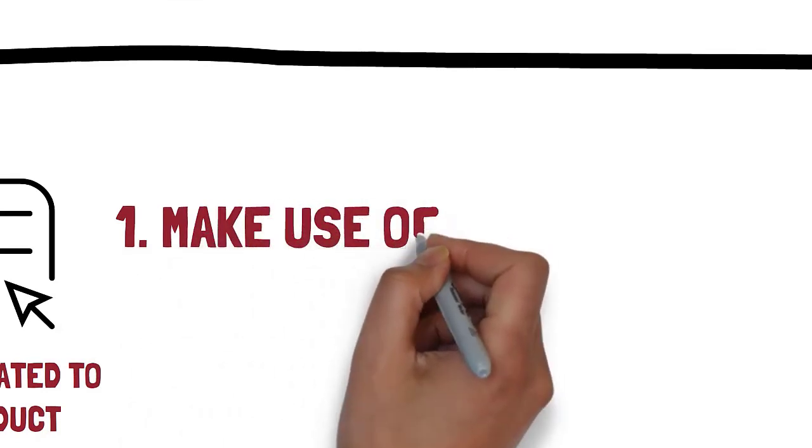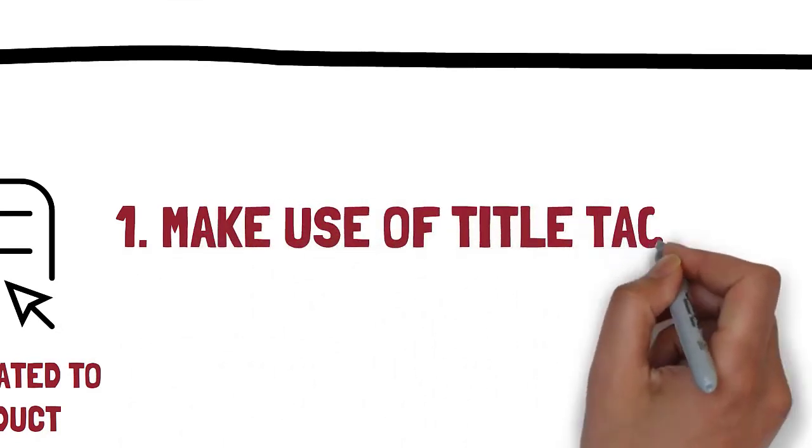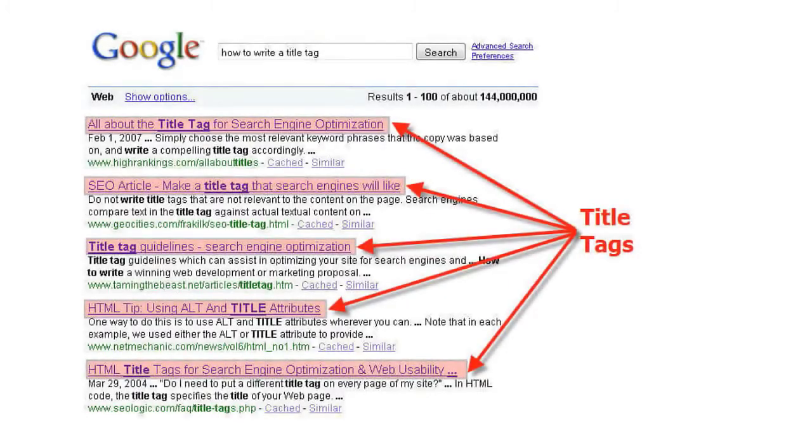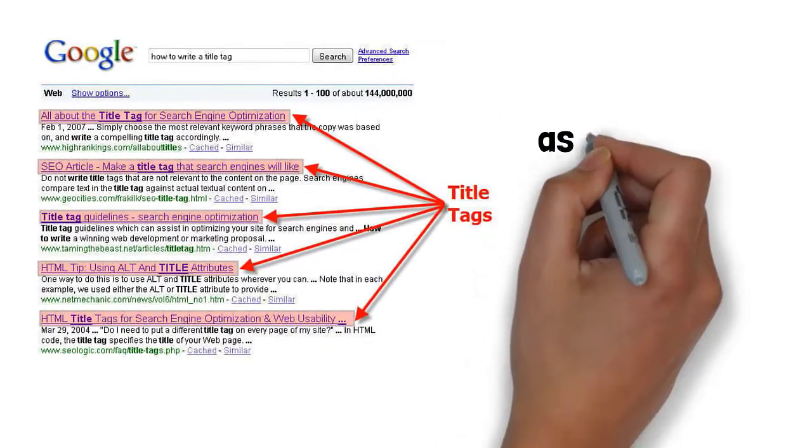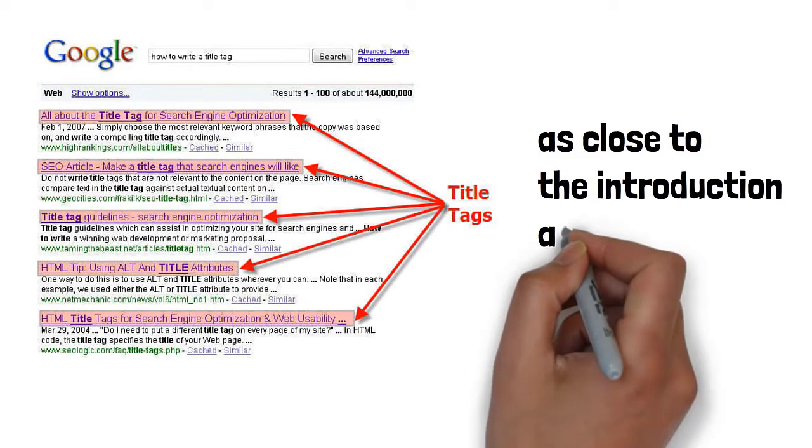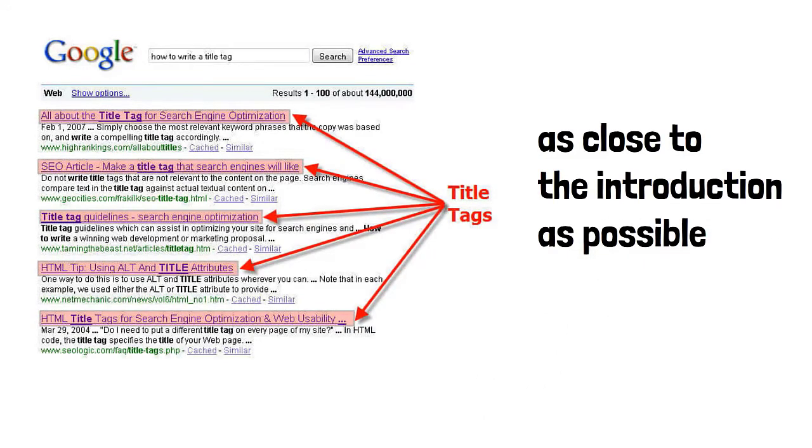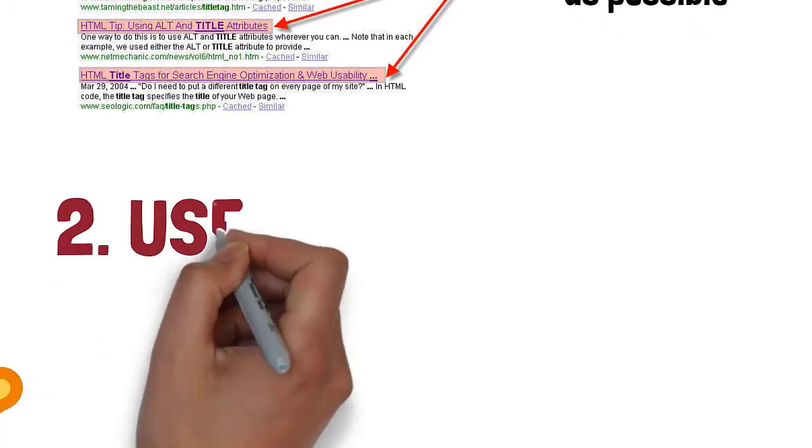First, make use of the title tag. Most beginners often overlook the importance of title tags. You can utilize the key phrase in the title and as close to the introduction as possible. This lets the search engine know what the content is about.